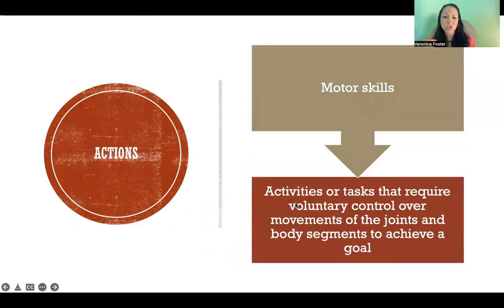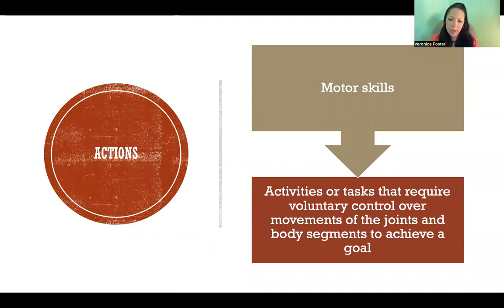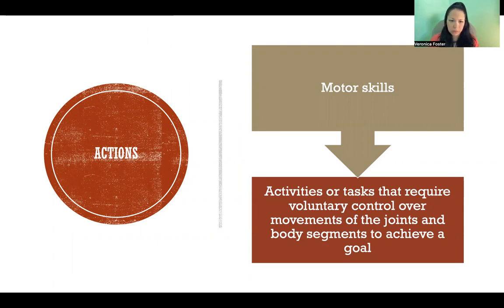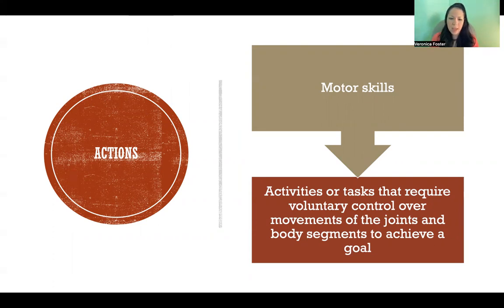An action is another term for a motor skill, meaning activities or tasks that require voluntary control over movements of the joints and body segments to achieve a goal. So there are three parts: it's an activity or task, we must use voluntary control over movement of our limbs, and it's to achieve a goal that has a specific purpose.